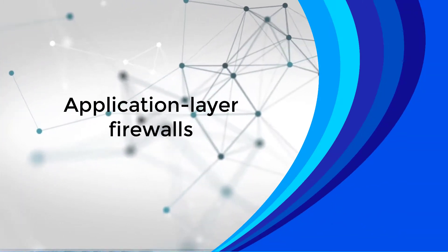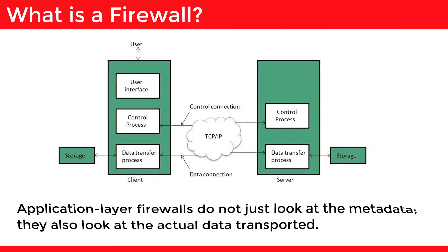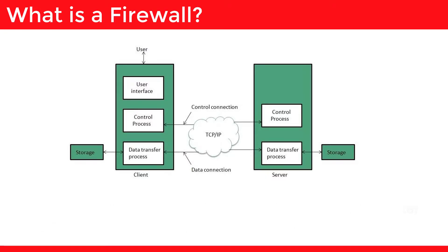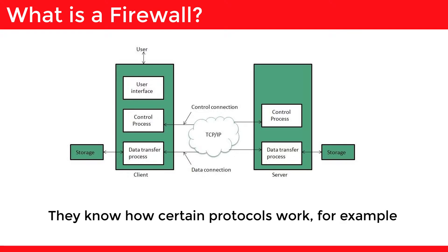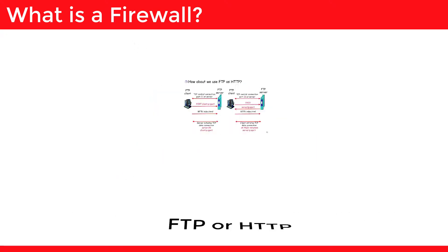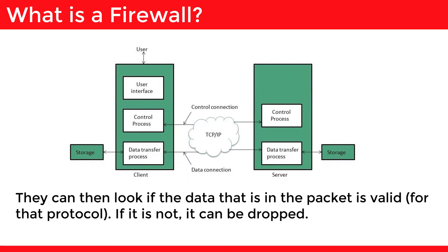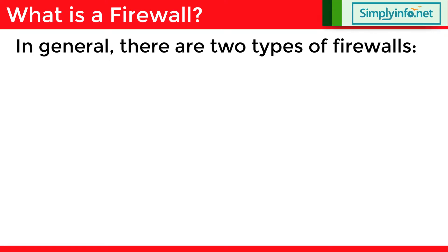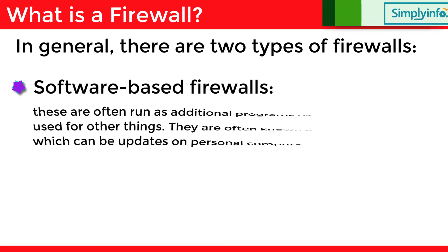Application layer firewalls do not just look at the metadata — they also look at the actual data being transported. They know how certain protocols work, for example FTP or HTTP. They can look at whether the data in the packet is valid for that protocol. If it is not valid, it can be dropped.